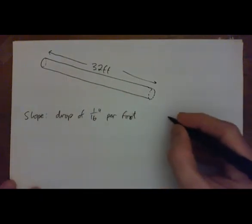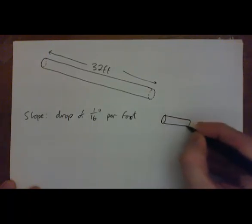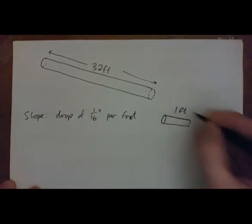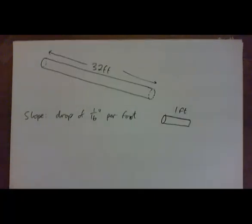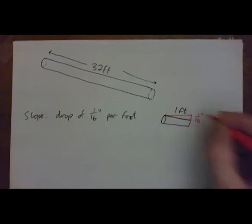So what that means is, for 1 foot of pipe, it's going to drop down 1/16th of an inch. Like that, so 1/16th of an inch.